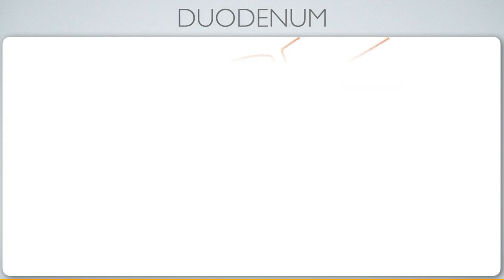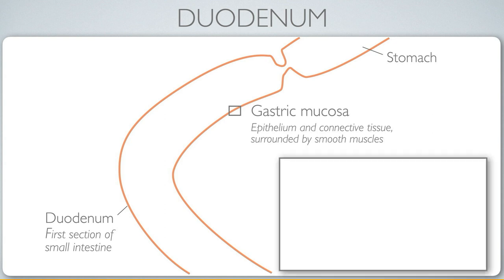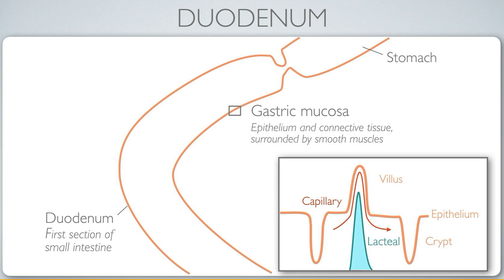Back to the cheeseburger: it was last being worked on in the stomach, the final opportunity for mechanical digestion. Then absorption occurs. A key feature of the small intestine is the composition of its membrane, called the gastric mucosa, which includes the epithelium, connective tissue, and surrounding smooth muscles. The epithelial membrane features finger-like projections called villi and invaginations called crypts. It is well-vascularized with capillaries, and also contains lymphatic vessels called lacteals, which play a role in fat absorption.